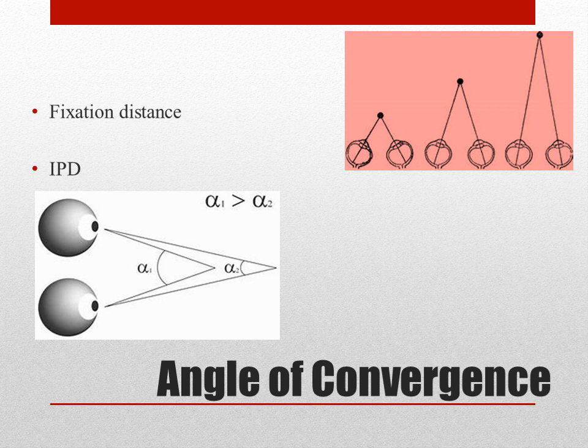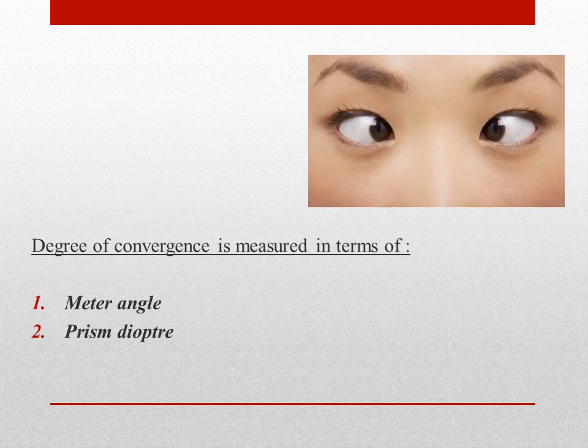We have also seen convergence insufficiency in patients with wider IPD. So it is case dependent, but usually in a normal individual a wider IPD tends to increase the angle of convergence a little. Now the degree of convergence is expressed in either of two ways: either in meter angle or in prism diopter.